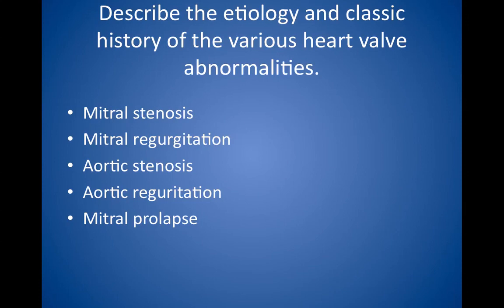Mitral regurgitation presents as a holosystolic murmur that radiates to the axilla. Other findings include a soft S1, left atrial enlargement, pulmonary hypertension, and left ventricular hypertrophy. Aortic stenosis presents as a harsh systolic ejection murmur that is best heard in the aortic area and that radiates to the carotids.